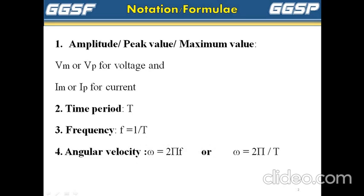First, have a look at notations and formulas. Amplitude, peak value, or maximum value is denoted by Vm or Vp for voltage and Im or Ip for current. M means maximum value and P means peak value.